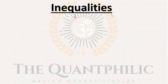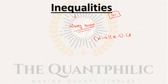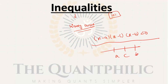Now let's talk about inequalities. There is about a 10 percent chance of a direct question from inequalities. The most important topic in inequalities is the wavy curve method. For example, given (x-a)(x-b)(x-c)(x-d) < 0, you plot the critical points like a, c, b in order, then alternate positive and negative regions. Your answer is the negative regions.